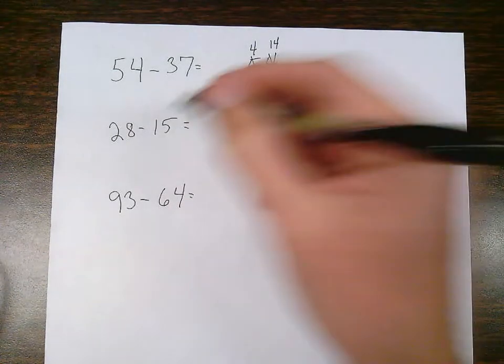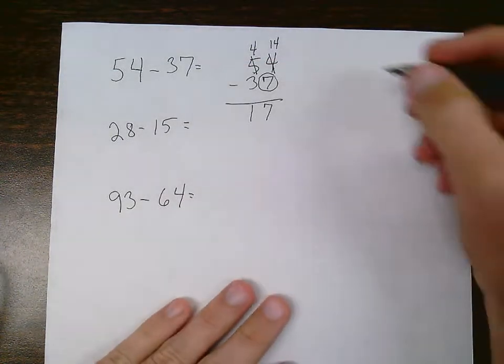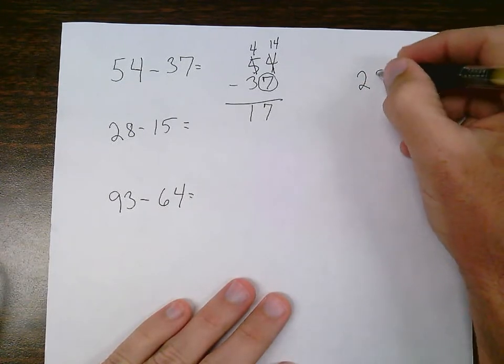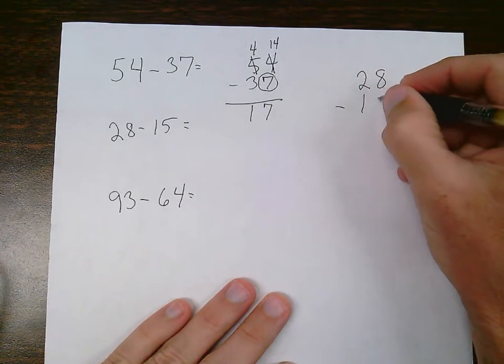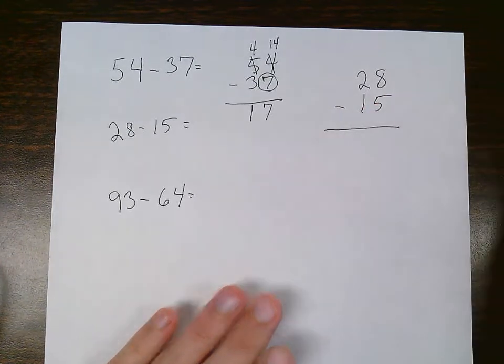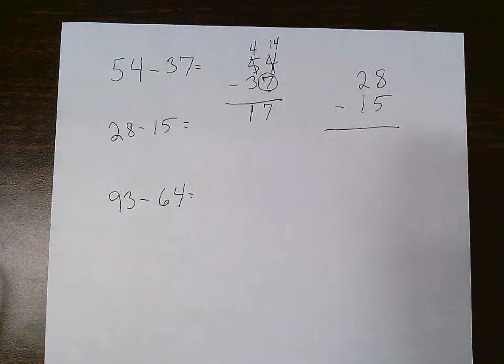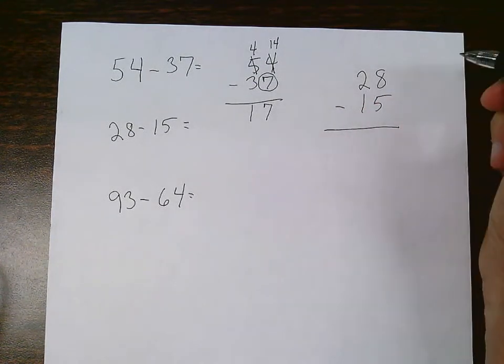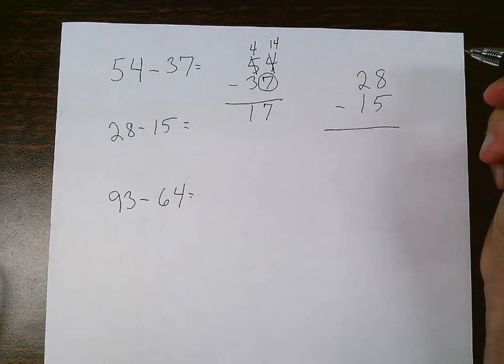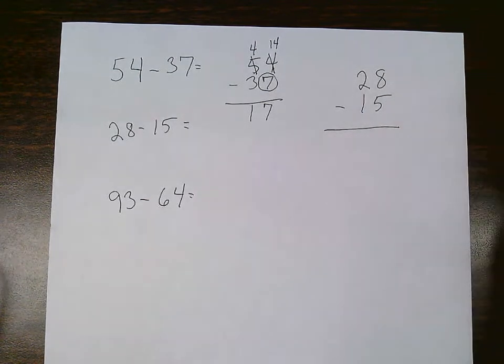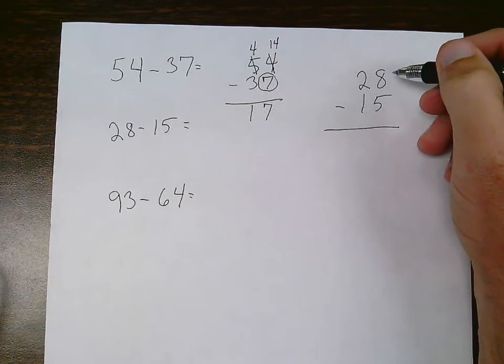Let's try this next one here, 28 minus 15. Once again, we put it vertically, making sure our place values are lined up. And I ask myself the question, can I do it? 8 minus 5, I can do that, because my top number is larger.